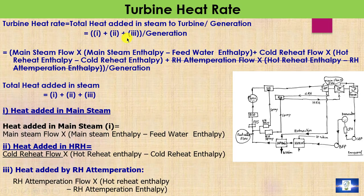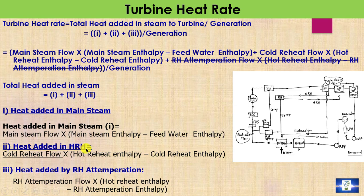The second question is the turbine heat rate. Turbine heat rate equals total heat added to steam in the turbine divided by generator output. The total heat added is divided into three parts: heat added in main steam, heat added in the reheat system, and heat added by reheater attemperation. In our case, reheater attemperation is zero. The heat added in main steam equals main steam flow × (H1 − feed water enthalpy). The heat added in the reheat system equals cold reheat steam flow × (H3 − H2).